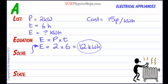So to work out the total cost, this is how much energy we've used, this is how much each kilowatt hour costs. We need to multiply these two together. So we get 12 kilowatt hours times by 15, and that's going to give us—10 times 15 is 150 plus 30—so that's 180 pence.